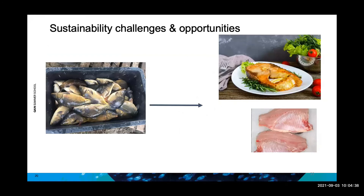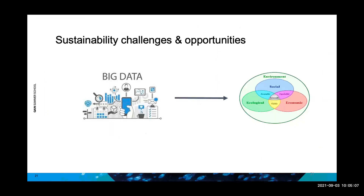For the carp industry in Poland, the key opportunity is processing. At the moment carp is often sold alive, especially around Christmas, so it is very seasonal and traditional. People want to utilize carp more efficiently, utilize the byproducts more efficiently to make more profit, so processing is being explored. There are also concerns around farm performance, climate change, and how this can affect fish growth and disease.